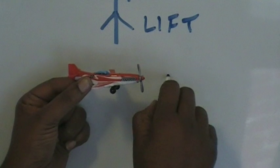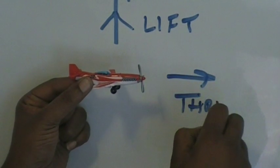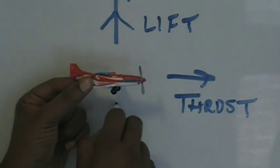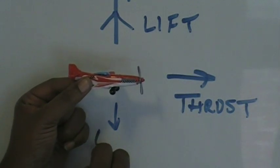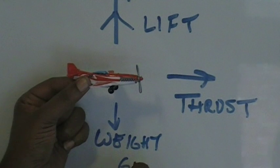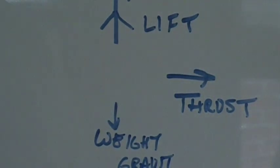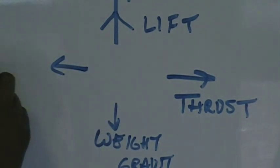The forward force is thrust caused by the power plant. We have a downward force which is called weight or gravity. Then we have a rearward force which is called drag.